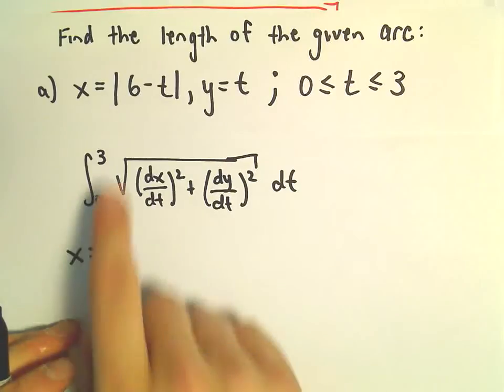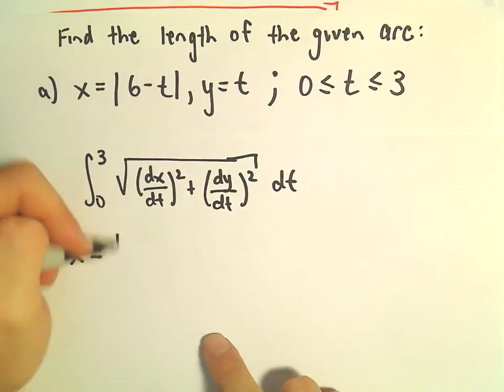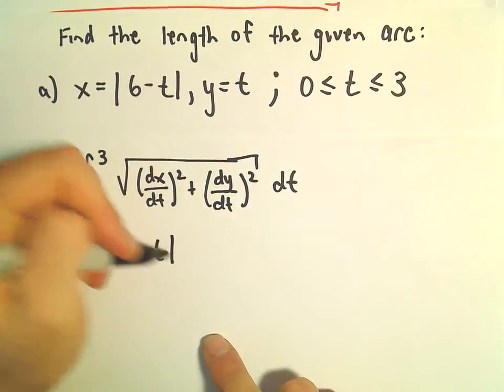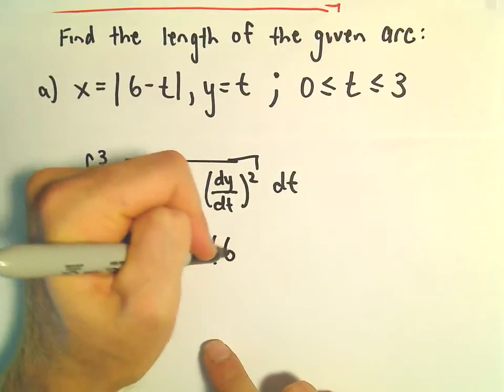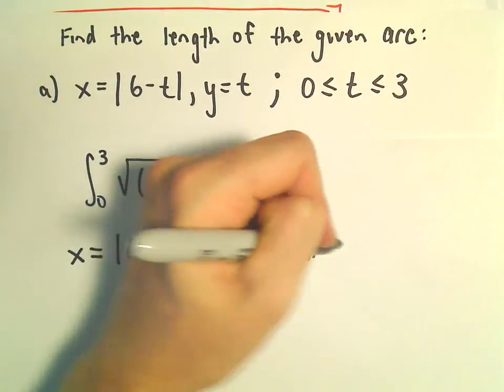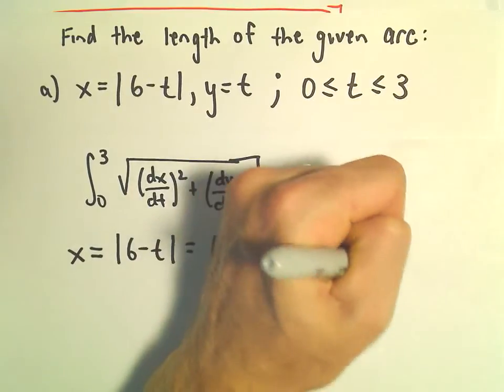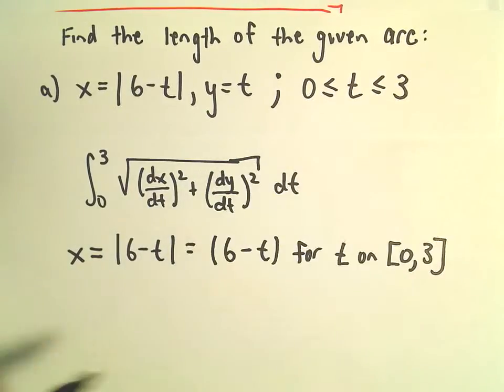So notice for x equals the absolute value of 6 minus t, we can actually just say this is the same thing as 6 minus t for t on the interval 0 to 3.